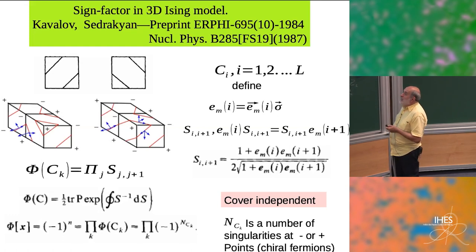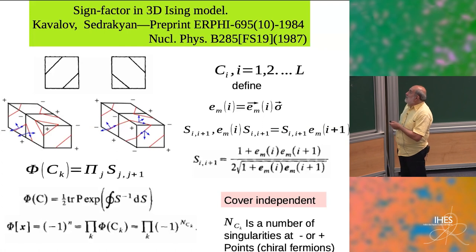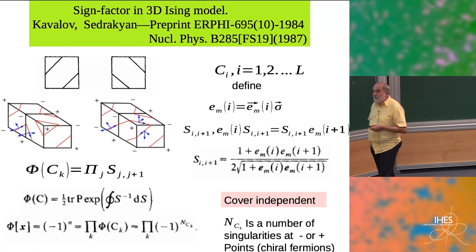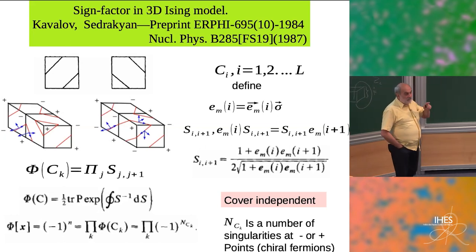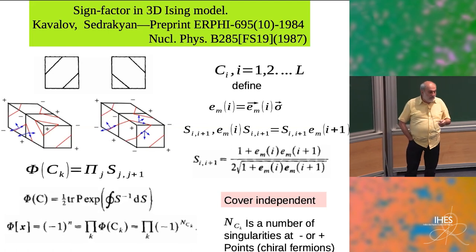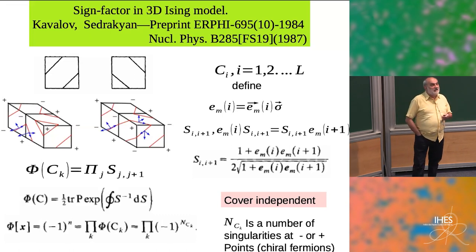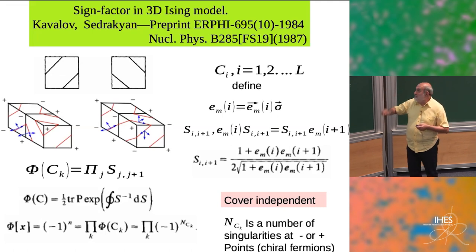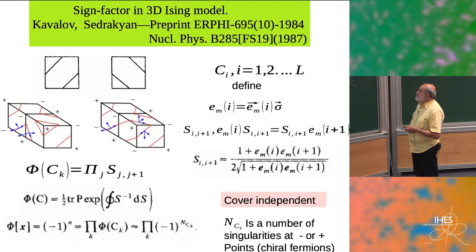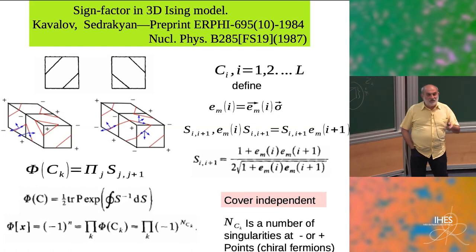It's easy to see — the lattices are bipartite, you can divide sites into plus and minus, with plus having only minus-sign neighbors. Then you can see that the curves either go around plus points or around minus points, where there is a singular point. That sign factor is nothing but minus one counting how many singular points are associated with plus or minus fermions.